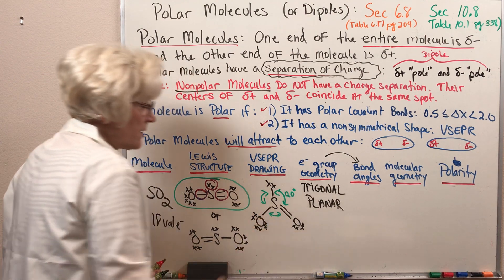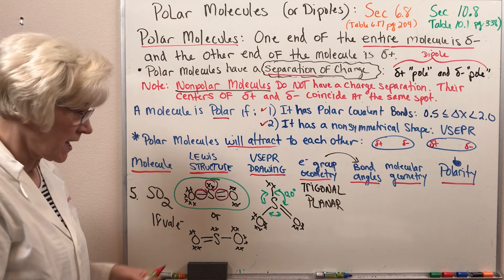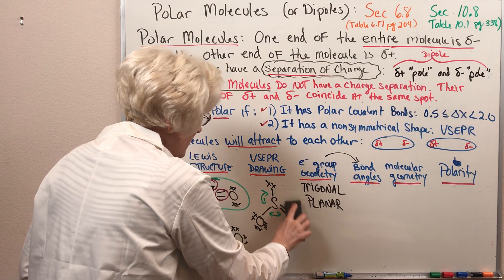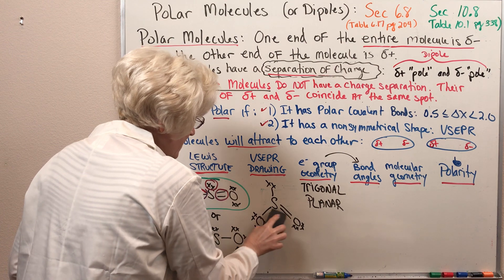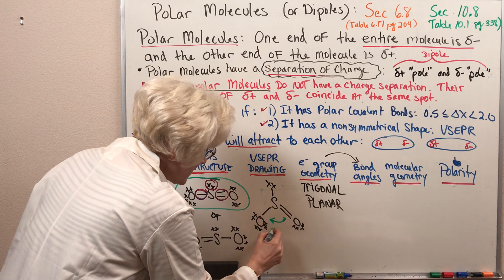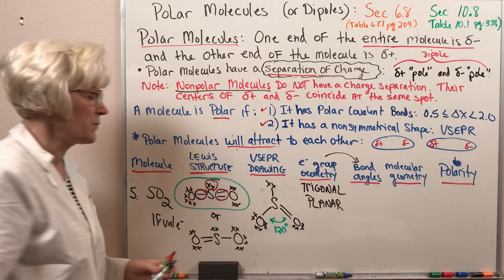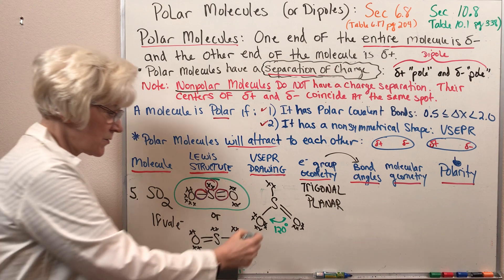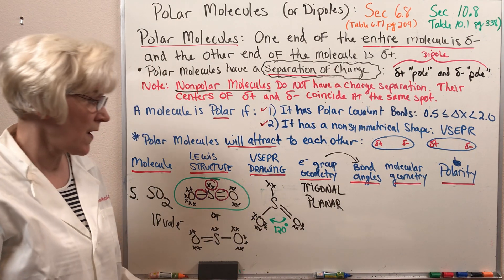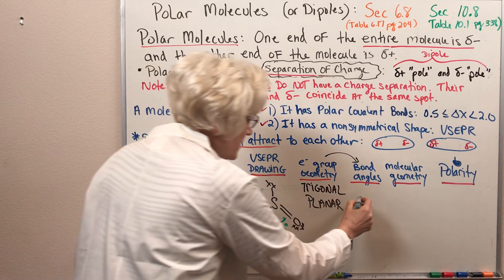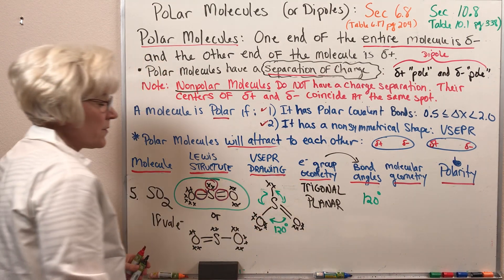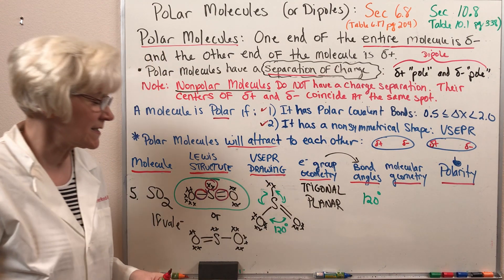Bond angles are determined directly from the electron group geometry, so we know that we have bond angles of 120 degrees. I should clarify: bond angles are limited to atoms that are bonded together. So the bond angle here is 120 degrees, and the other angles would be 120 degrees as well.